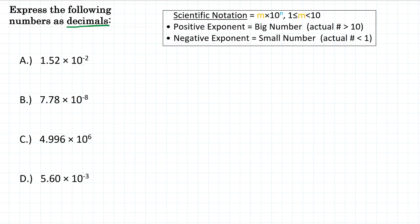Scientific notation means that it is written as m times 10 to the n power. That first number m must be greater than or equal to 1 and less than 10. If the exponent n is positive, that means we are writing a very big number — something greater than 10, like 100,000 or 100 million. If our exponent is negative, that means the scientific notation represents a very small number, something like 0.00001, much smaller than 1.